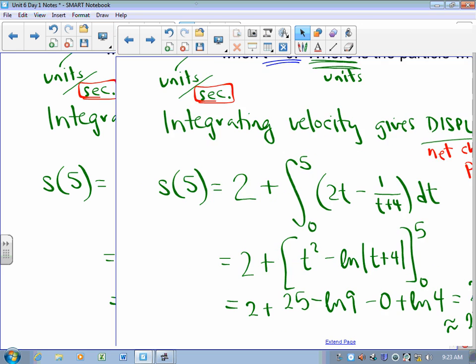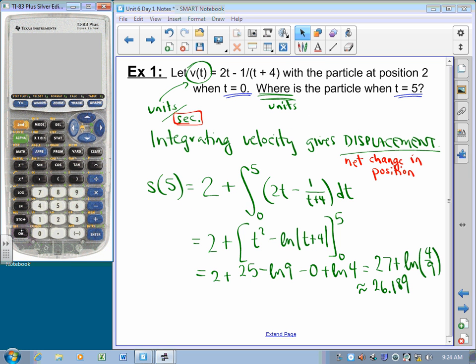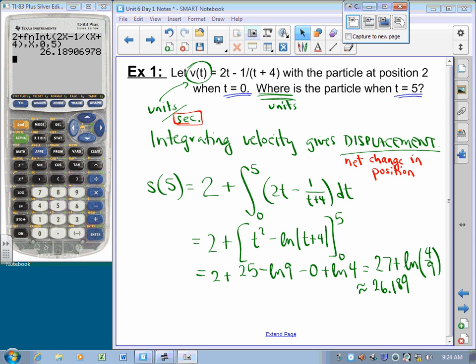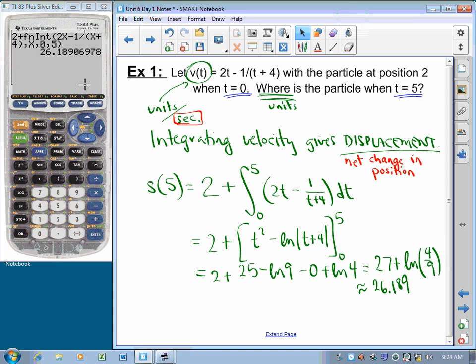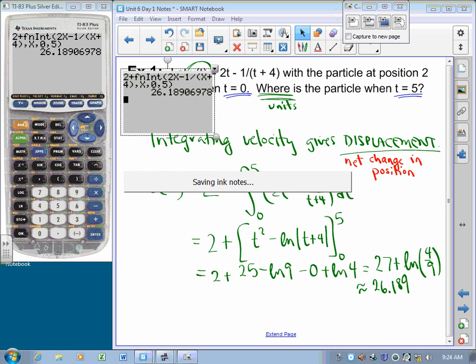Could I have done that on the machine? You bet. I could have said 2 plus the integral, that's math 9, of 2x minus 1 over x plus 4, comma x, comma 0, comma 5, got the same answer. And I'll take a picture because it lasts longer.